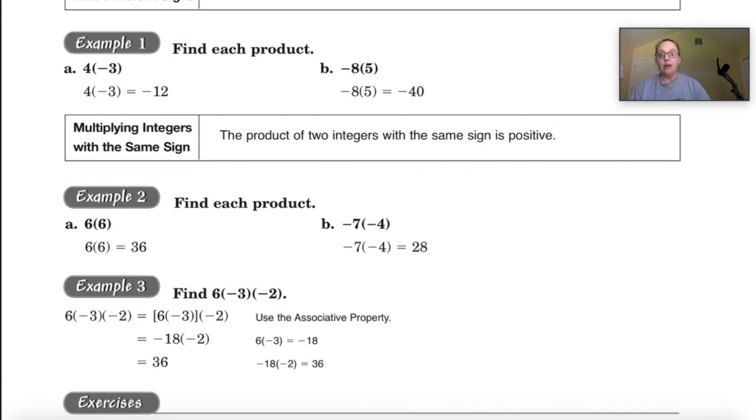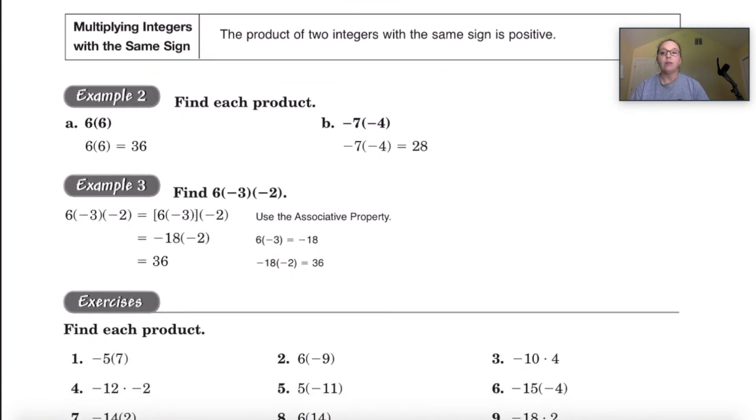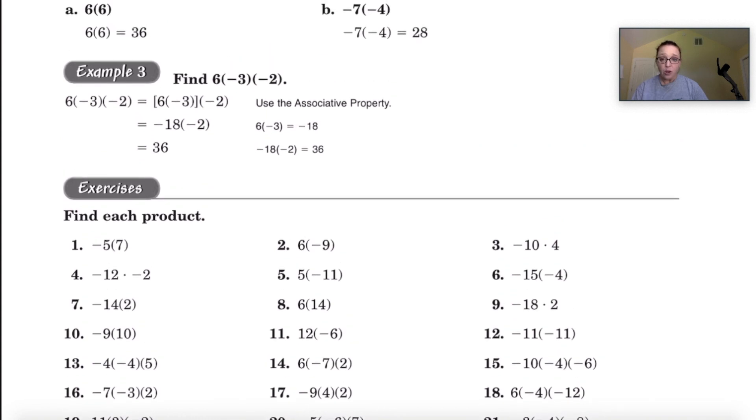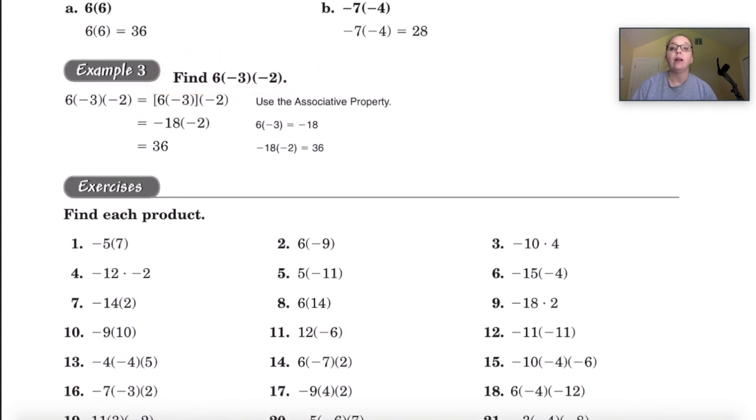Let's go down to example three because when we are talking about multiplying more than two integers at the same time like you have right here, then we have to do a little bit of extra work.